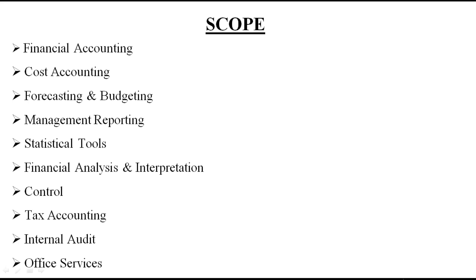Management reporting: reports prepared at lower or managerial level are submitted to the top level of management — both routine and special reports are maintained in management accounting. Statistical tools such as graphs, charts, diagrams, and tables are used to present accounting information in a more meaningful and presentable way. Financial analysis and interpretation of financial statements helps find out the profitability, solvency, and liquidity position of an enterprise. Controlling — looking backward — aims to use various resources in the most economical, efficient, and effective manner through different techniques of control.